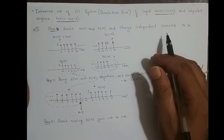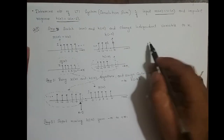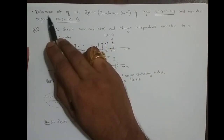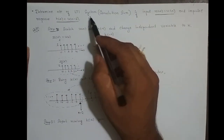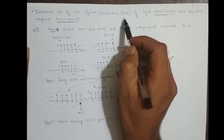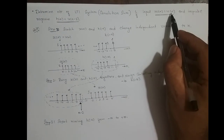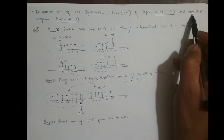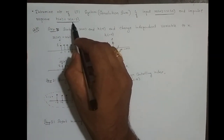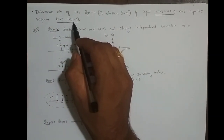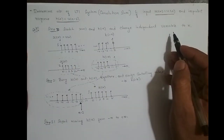In this video I will take up an example to solve the convolution sum of an infinite length sequence. The problem is to determine the output of a discrete time LTI system — that is the convolution sum — where the input x(n) is u(n), the unit step function, and the system's impulse response is h(n) = u(n-2), which is the unit step function shifted right by 2 samples.